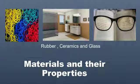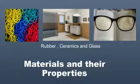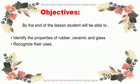Assalamu alaikum my dear students, how are you all? Hope everyone is fine. Today we are discussing rubber, ceramic, and glass, which is a subtopic of chapter number four: materials and their properties. The objectives are: by the end of the lesson, students will be able to identify the properties of rubber, ceramic, and glass, and recognize their uses.